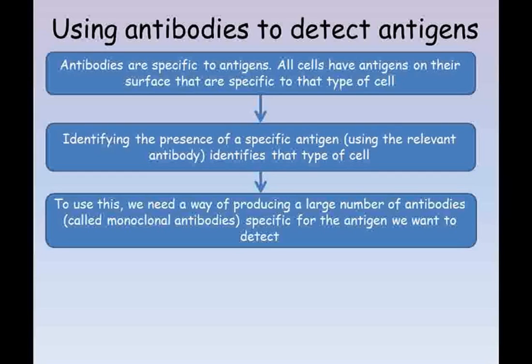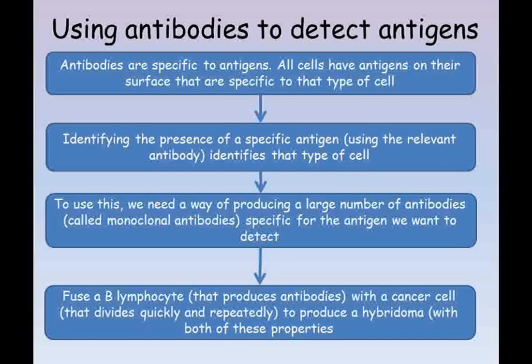We know that antibodies are produced by lymphocytes. However, unfortunately, once a lymphocyte starts to produce antibodies, it becomes a B lymphocyte and no longer divides. This means we are left with a single cell producing the antibodies we need. We need a cell that produces the antibodies required and that also divides to make more similar cells to also produce these antibodies. The answer is to fuse a cell that divides quickly and repeatedly — specifically a cancer cell — with a B lymphocyte. The next problem is making sure that the B lymphocyte is producing the antibody you want, whether it's one to recognize cancer cells or to identify a compound in a pregnant woman's urine to act as a pregnancy test.